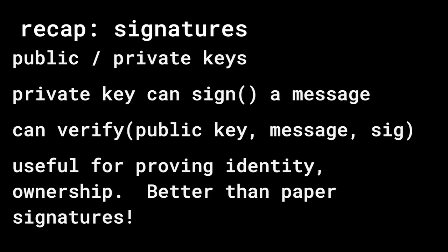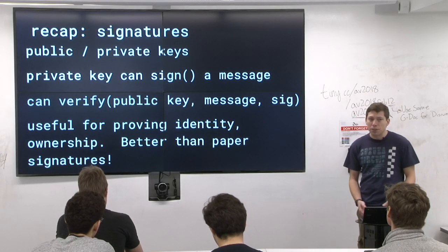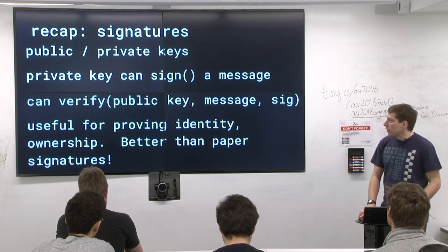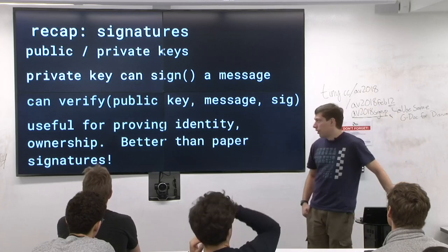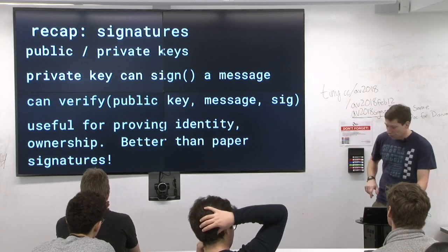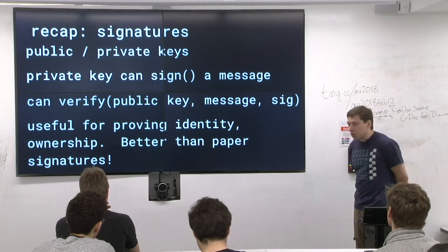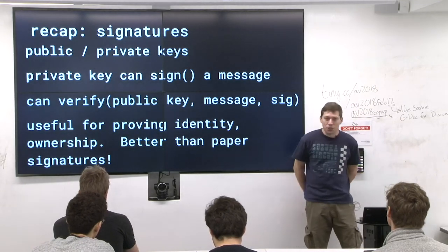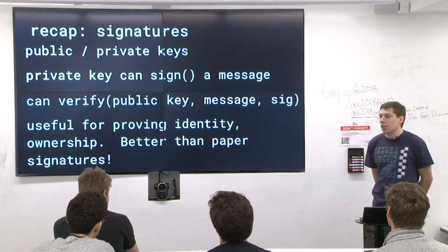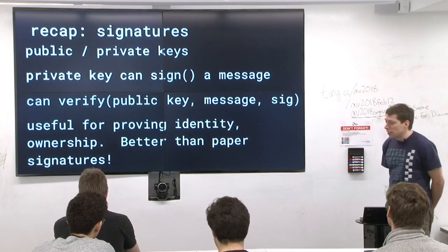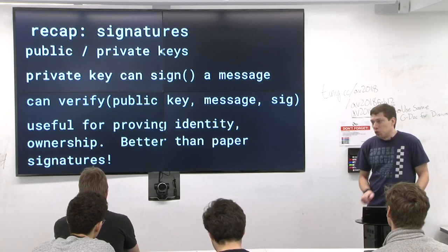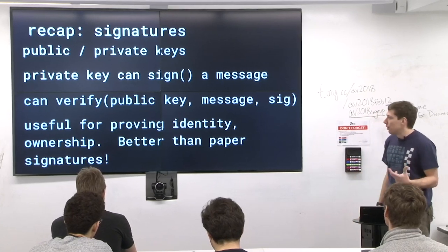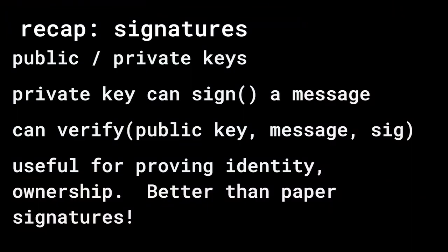Quick recap on signatures: you have these public and private keys — a key pair where you generate the private key and distribute the public key. The private key can sign a message, and anyone can verify given the triple: public key, message, signature. This is useful for providing identity, ownership, and lots of things. It's better than paper signatures — paper signatures don't really sign the message, they just sign the paper. You can sign a blank piece of paper and add text afterwards; you can't do that with these systems.